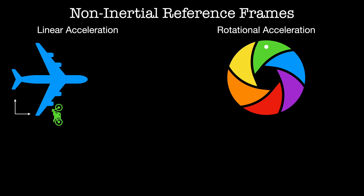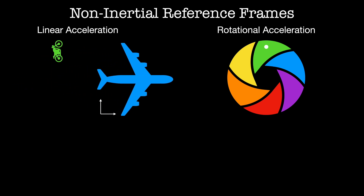Here we'll look at an airplane that's accelerating in the x direction. While that's happening, a motorcycle is accelerating northwards. The plane has an acceleration a, and the motorcycle is experiencing a force f, which is equal to m times r0 double dot, both in the lab frame.